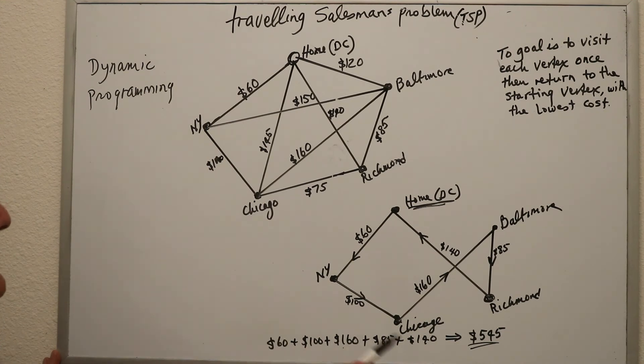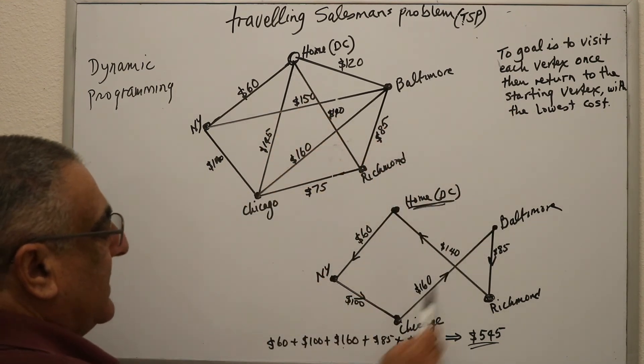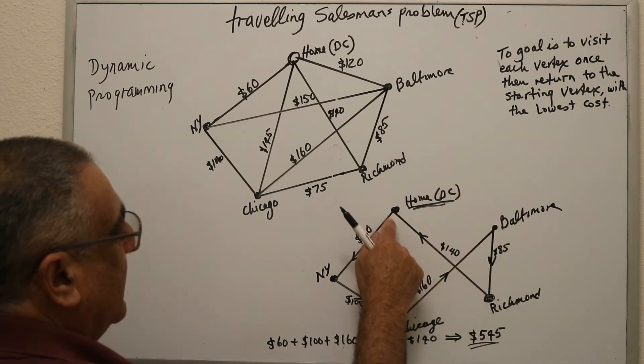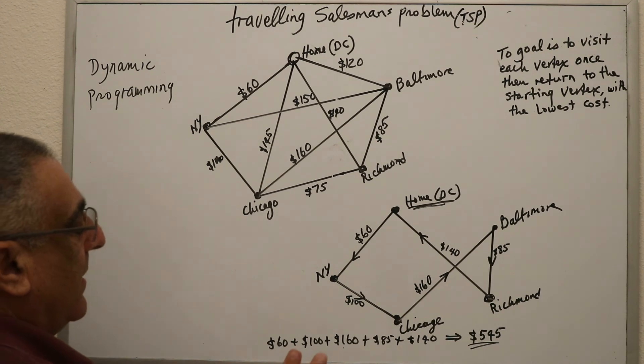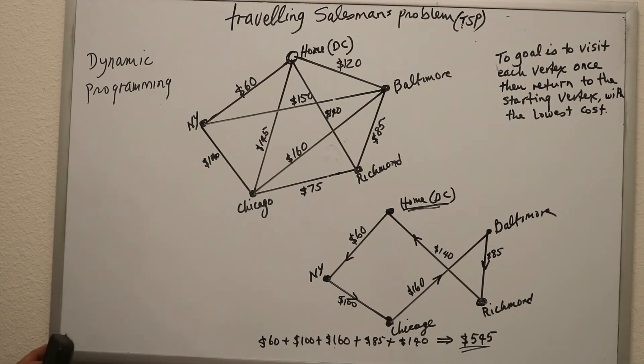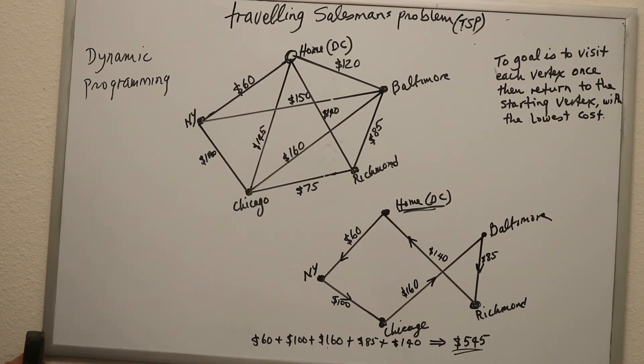So that's the goal. Visit each vertex, each city, and return to the starting city, the starting vertex. Keep in mind you've got to look for the least cost, the cheapest way to do it. And that's the whole concept of the traveling salesman problem. That's it. Thank you for listening.